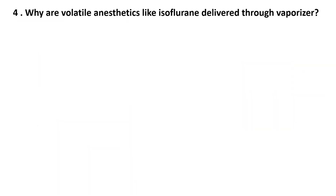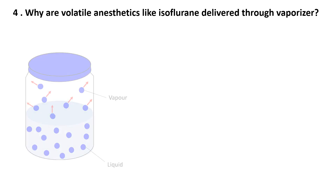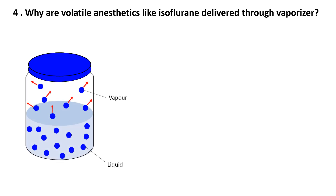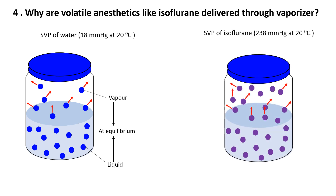Why are volatile anesthetics like isoflurane delivered through a vaporizer? The reason is due to saturated vapor pressure. Saturated vapor pressure is the maximum pressure exerted by a vapor when it is in equilibrium with its liquid phase at a given temperature. At SVP, the rate of evaporation equals the rate of condensation, so there is no net change in vapor amount and the system is saturated. Isoflurane has a high saturated vapor pressure, meaning it evaporates easily into a potent, concentrated gas. Without a vaporizer, isoflurane's high SVP would lead to too much anesthetic gas in the breathing circuit, risking overdose.